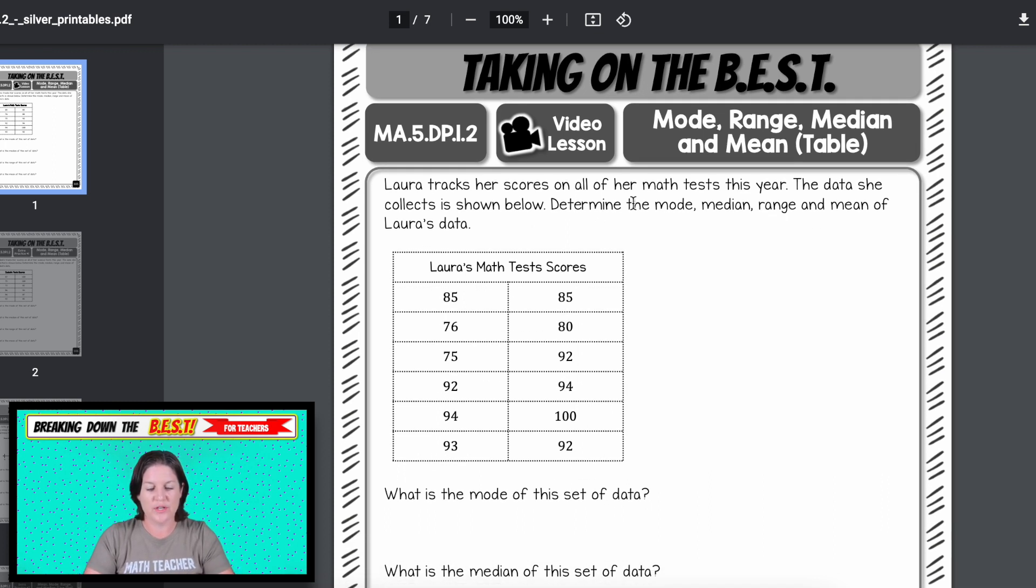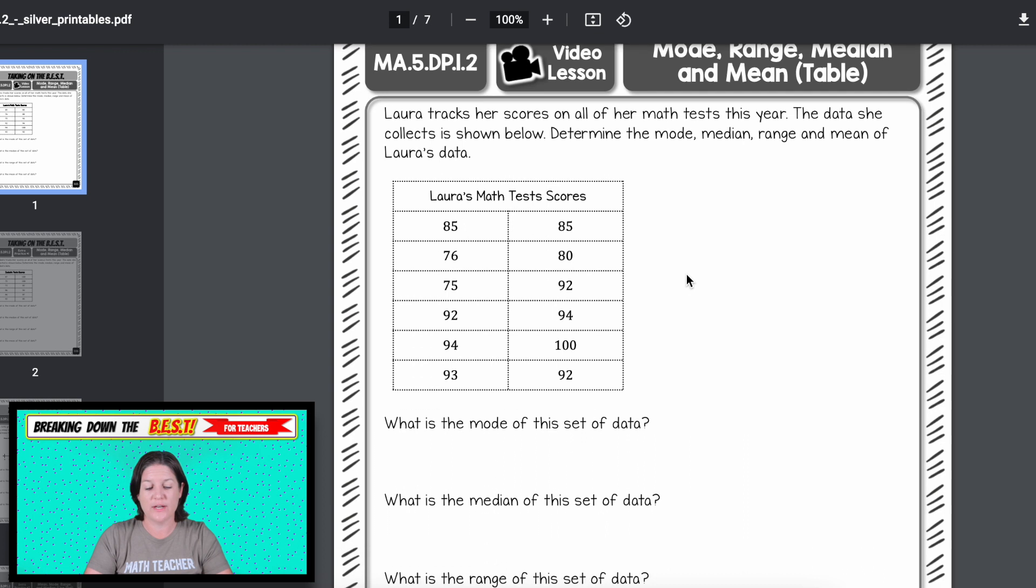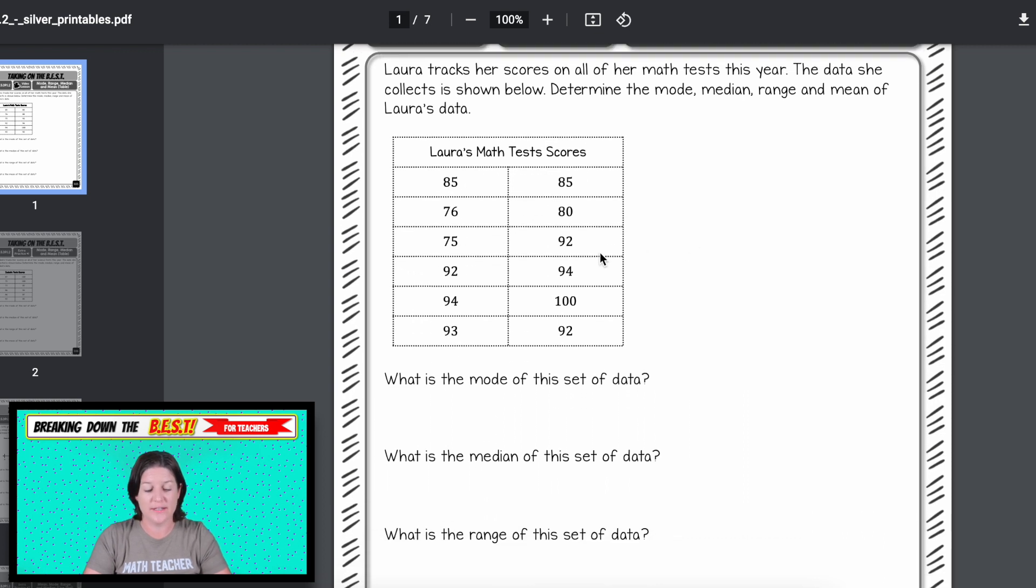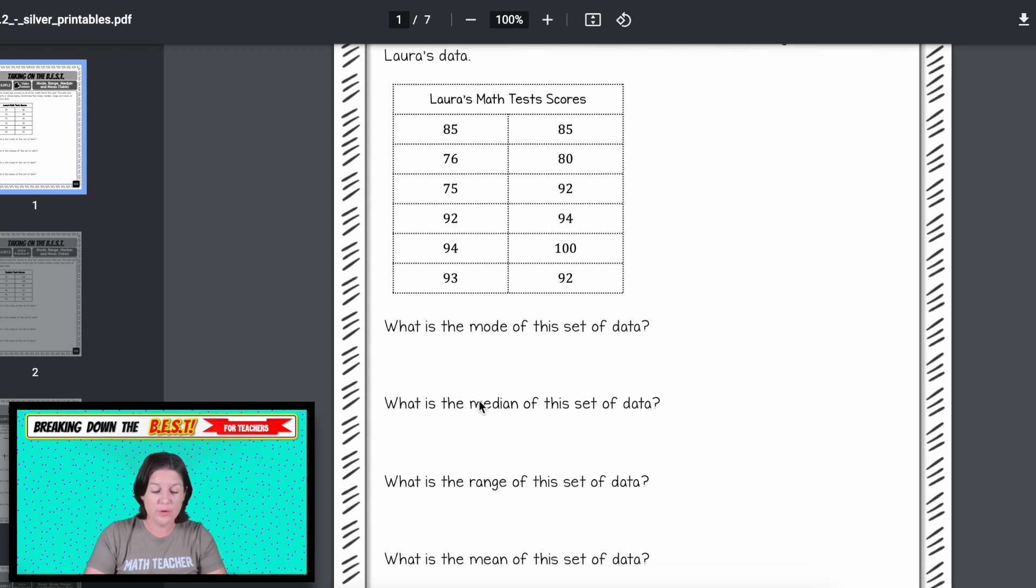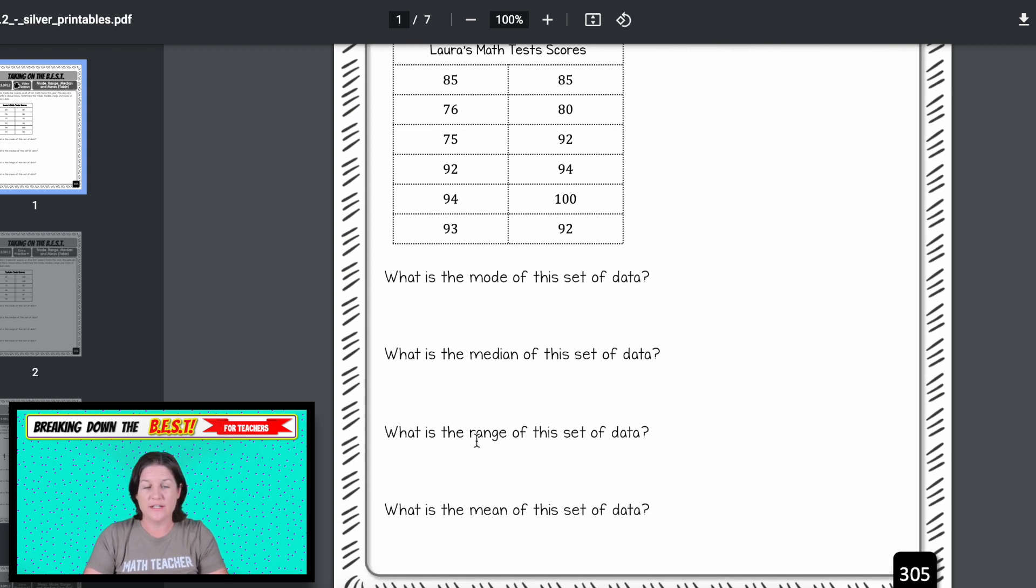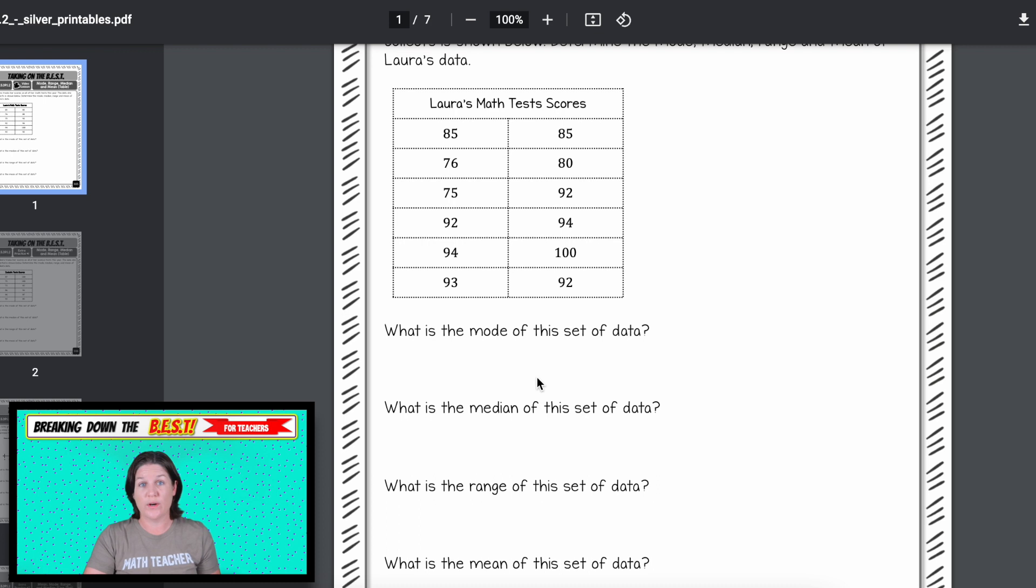It says Laura tracks her scores on all of her math tests this year. The data she collects is shown below. Determine the mode, median, range, and mean of Lauren's data. So in the video lessons, we're showing how we take this information off of the table, put it in order from least to greatest, use that to find the mode, to find the median, finding the range, and finding the mean. The expectation is that students record the notes onto the paper as we work it out.